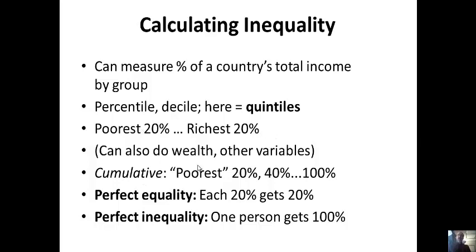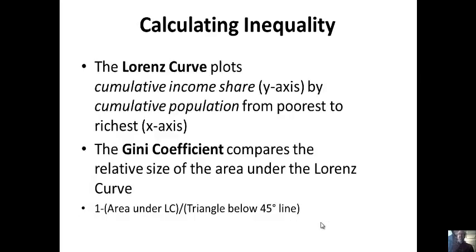We're going to take these groups and make them cumulative. We start with 20, but then 20 and the next 20 are the poorest 40. Then we add the next group and get the poorest 60, all the way to the poorest 100% — which is everybody; 100% of people get 100% of everything. Under perfect equality, each 20% gets 20% — nobody has more income than anybody else. Under perfect inequality, one person gets 100%. So you go from zero people getting more to one person getting everything.